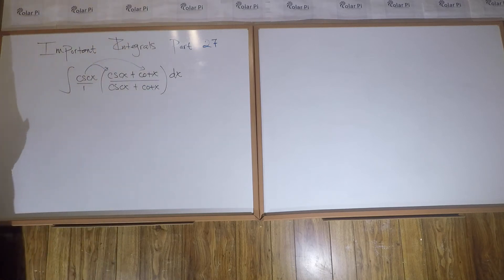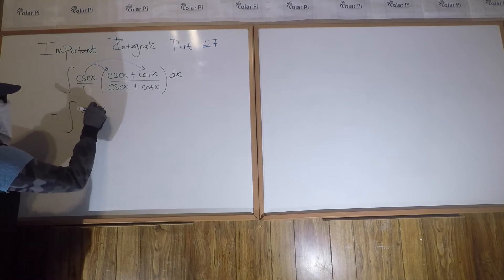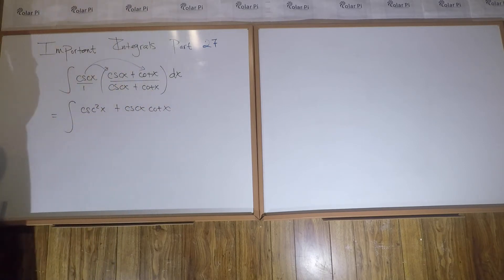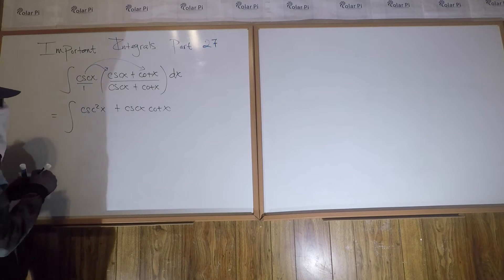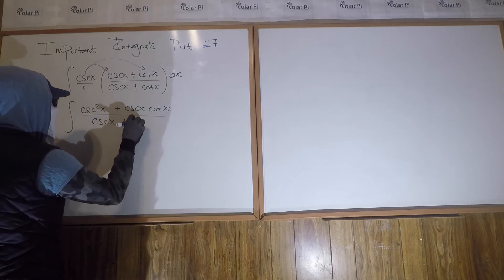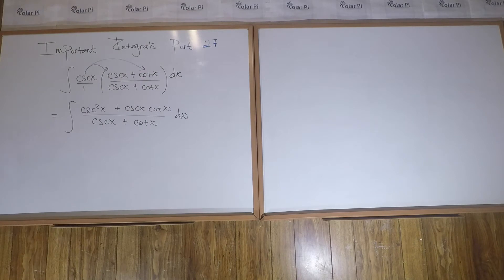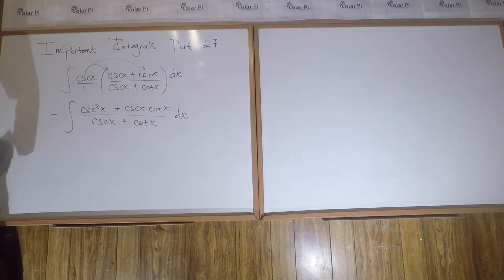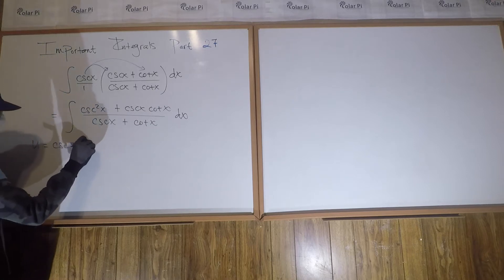When we do that, we get cosec squared x plus cosec x cot x in the numerator, and in the denominator we get cosec x plus cot x, divided by cosec x plus cot x, dx. The task is pretty simple — if you don't see it, it's u-sub.